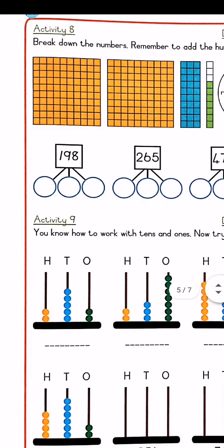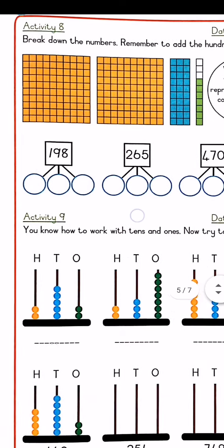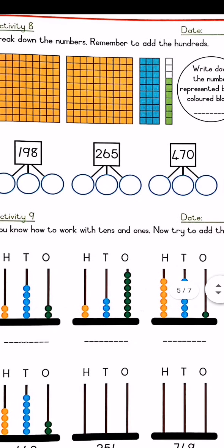Then you have to break the numbers up into 100, 10s, and units. So if you look at the number 198, it will be 100, 90, and 8. 265. So in the first circle, you write 200, then 60, then 5. 470. So you'll write 400 in the first circle, 70 in the middle, and 0 at the end, because there's no 1s.